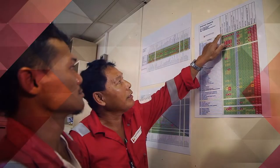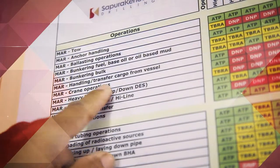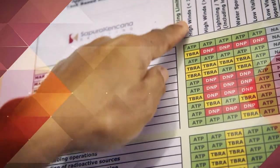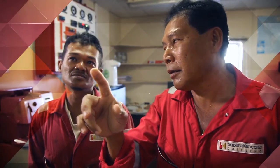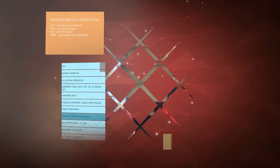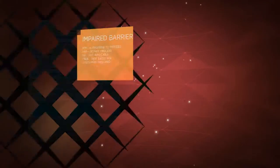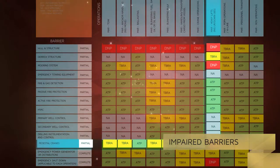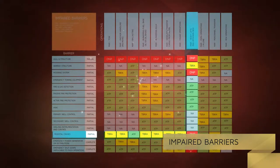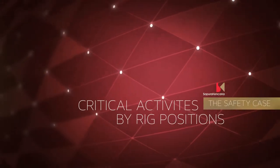The SUB, or Summary of Operational Boundaries, defines limits that, if exceeded, place the conduct of a task beyond acceptable limits of safe operations. These acceptable limitations have been determined using experience and establish the boundaries in which operations can be carried out. The SUB provides an easy reference for simultaneous operations, impaired barriers, and external influences, based on the requirements of safe operations.